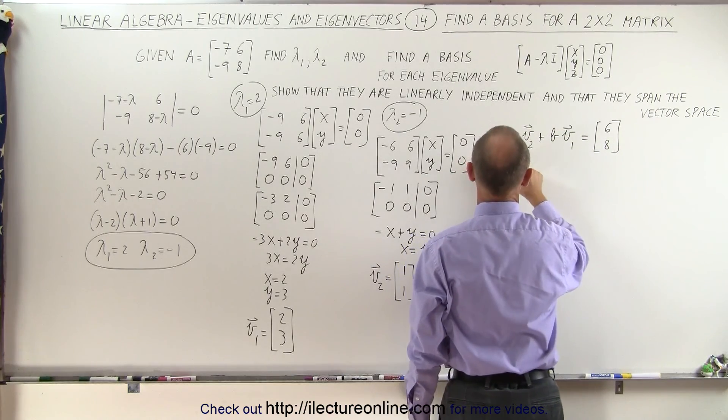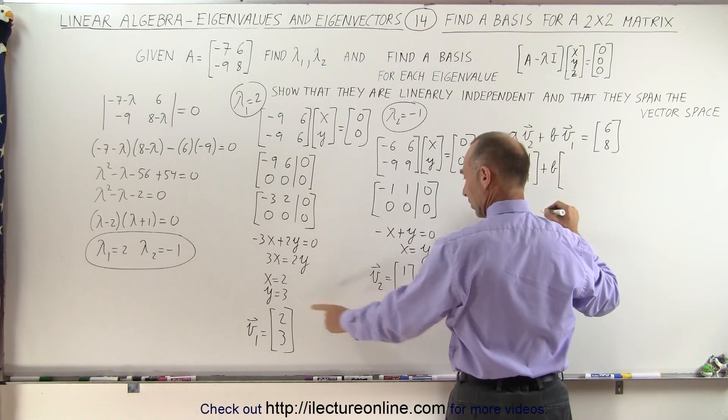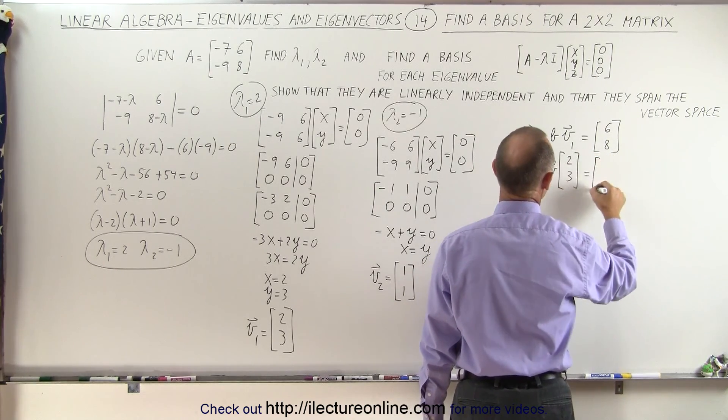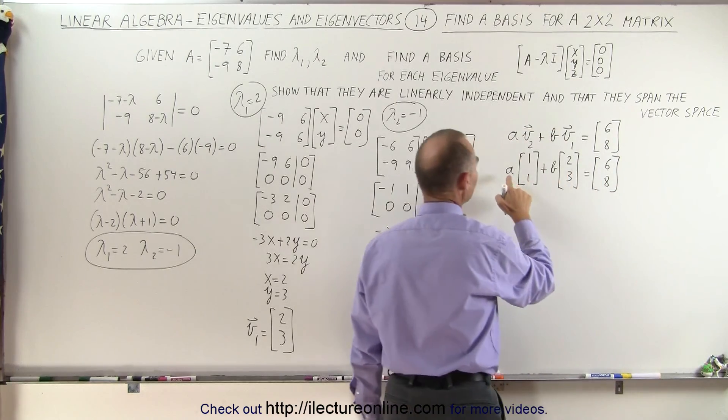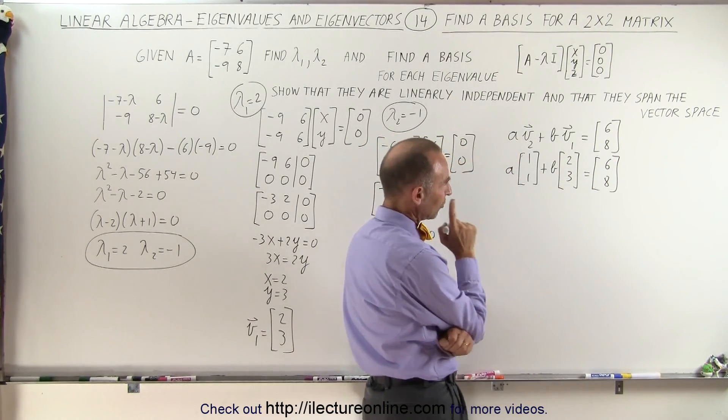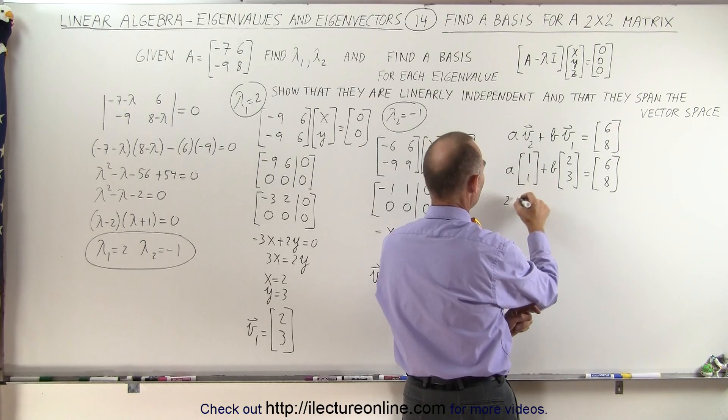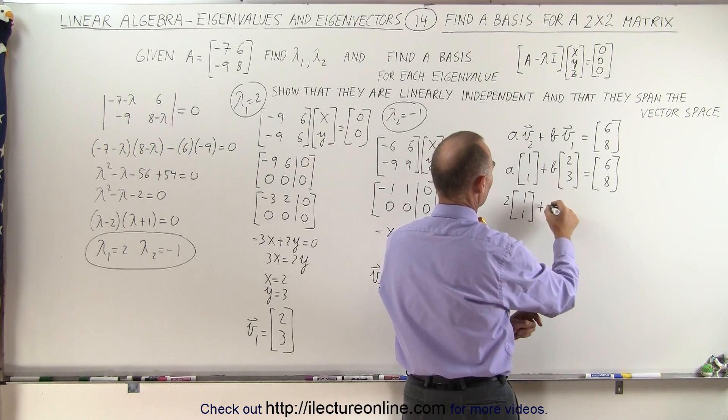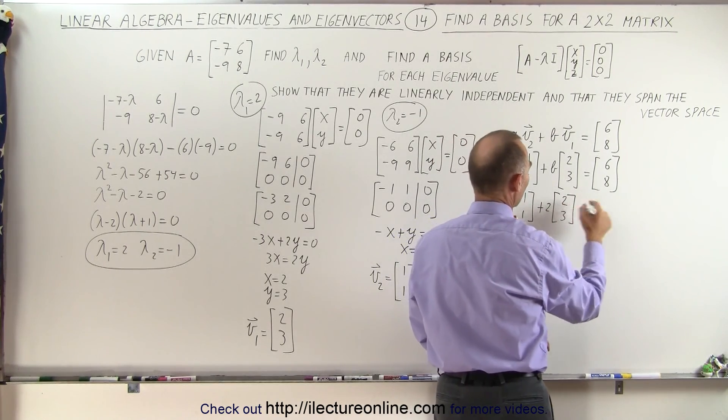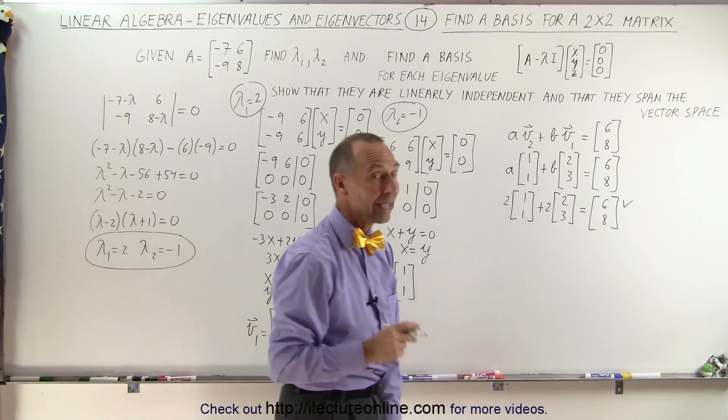And if I plug down the values in here, so I have some constant a times 1, 1, plus some constant b times 2, 3, that should equal 6 and 8. Are there such values? Can I find an a and a b, some constants, so that when I multiply this together, I get 6 and 8? And simply by inspection, you can see that if I let a equal 2 and b equal 2, I think that will do it. So 2 times 1 and 1, plus 2 times 2 and 3, is equal to 2 plus 4, which is 6, and 2 plus 6, which is 8. And sure enough, that does the trick. So I am able to do that.